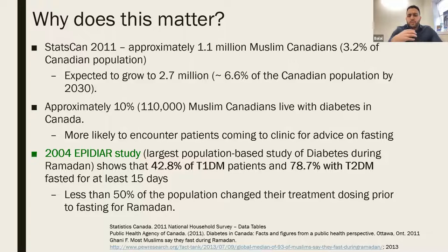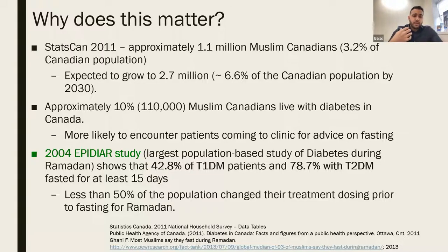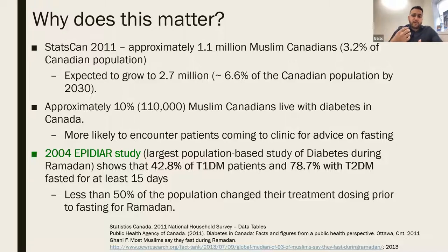In the Canadian context, why does this matter? In 2011, there were about 1.1 million Muslim Canadians — likely a lot more now with immigration. A key study from 2004 showed that 43% of type 1 diabetes patients and about 80% of people with type 2 diabetes fasted for at least 15 days during Ramadan, and less than half of those people changed their medications prior to Ramadan. This is very important because low blood sugar levels and dehydration can be life-threatening — you can end up hospitalized.